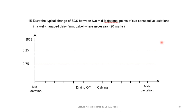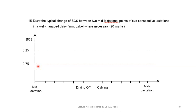Now that you have a good understanding of body condition score, try to draw the fluctuation of BCS across the different phases. Note that the previous charts started at calving, but here the exercise starts at mid-lactation — try to draw this from what you have understood, then go back to the previous slides to verify your answer.